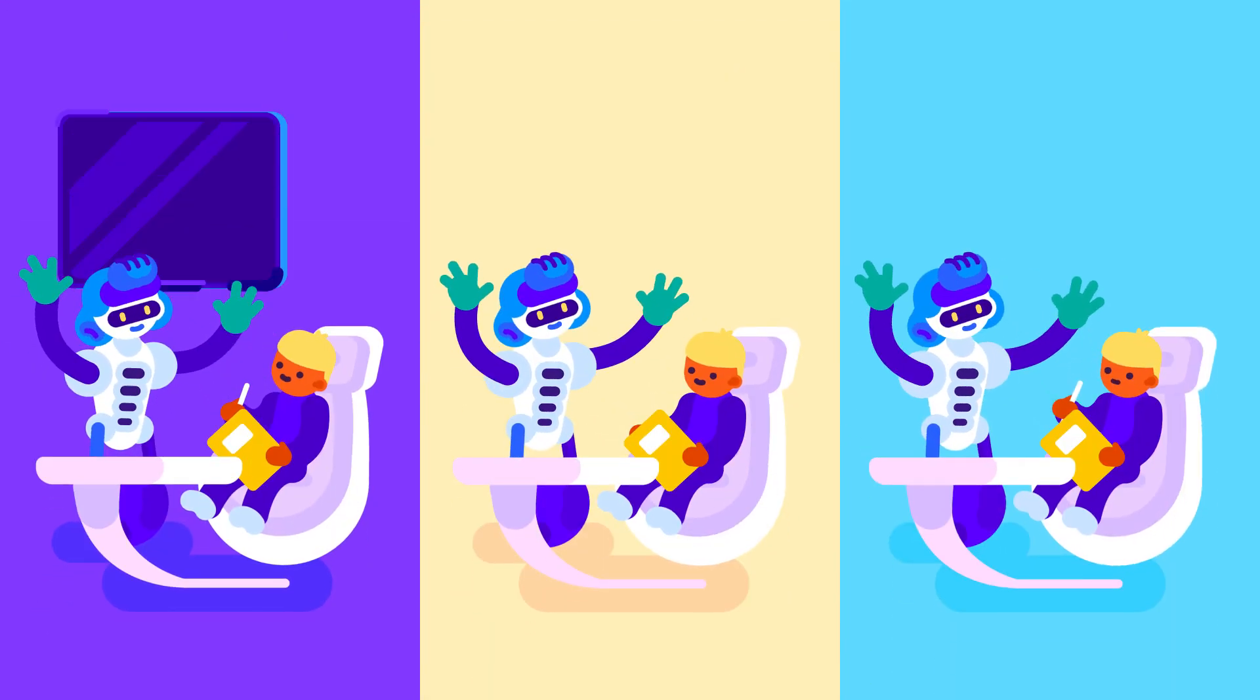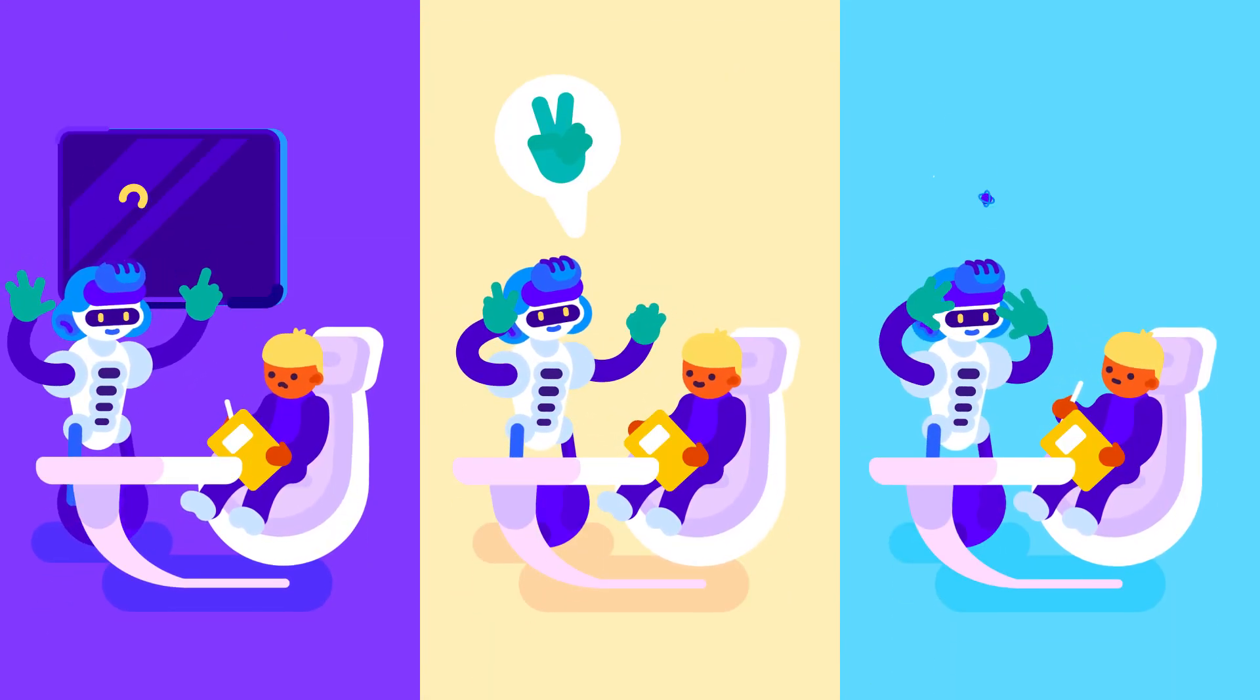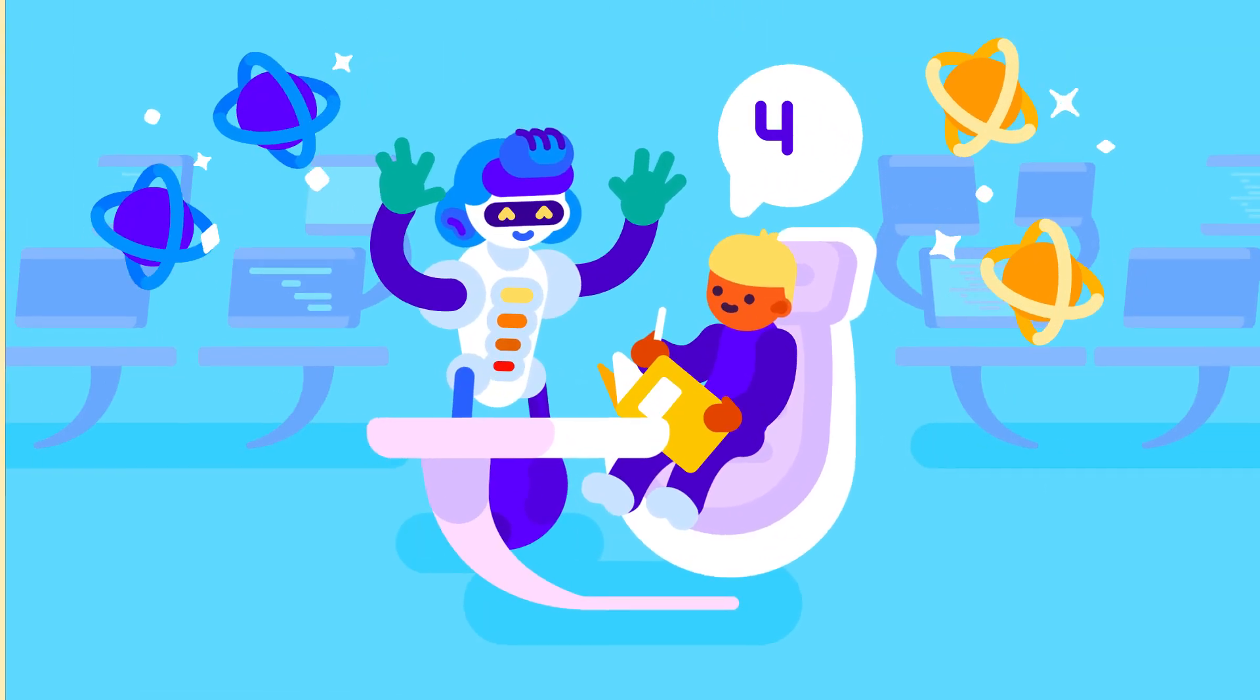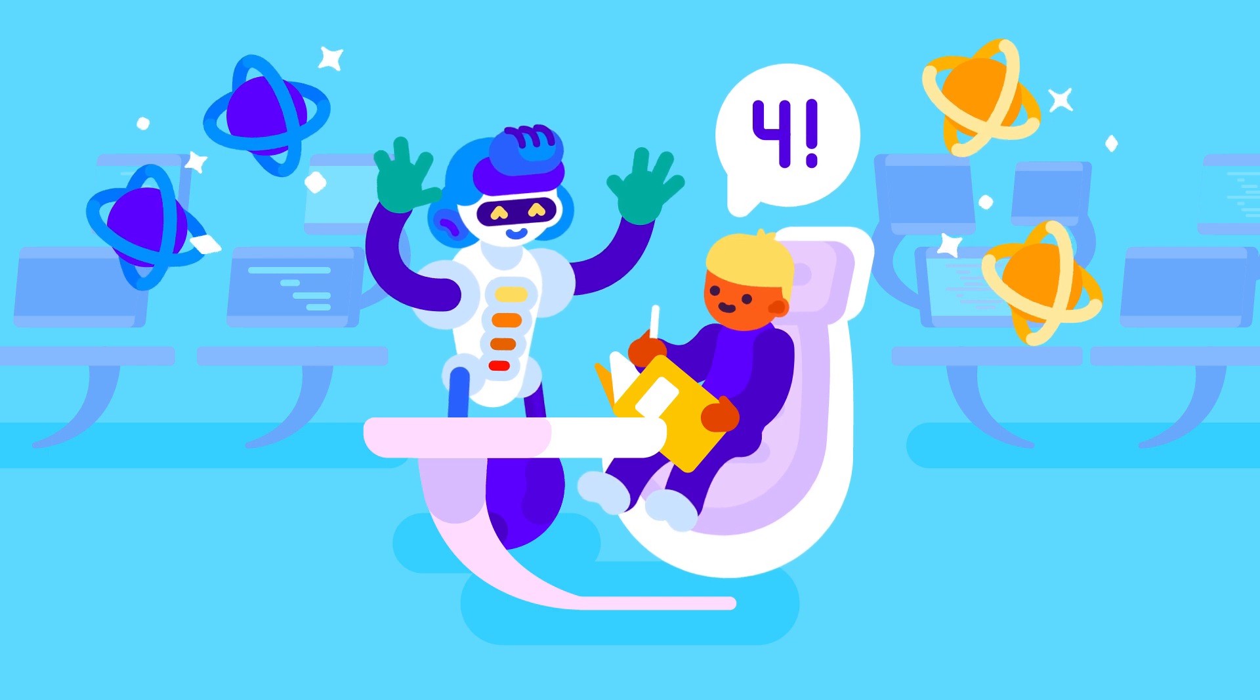Now, let's say a robot's goal is to teach the child to add 2 plus 2. It tries different approaches and discovers which one works best for this individual child.